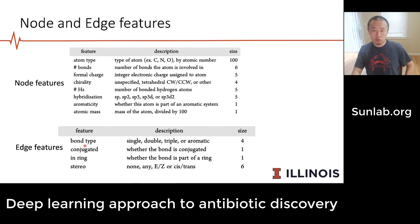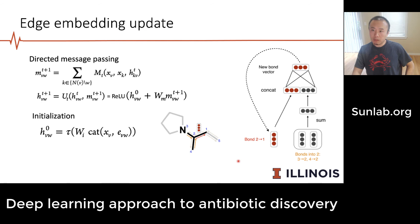In terms of node and edge features, there are different sets of features on the nodes, including atom types and number of bonds, each with a specified dimensionality. Similarly for edges, features include bond type, whether the bond is on a ring, and other properties — so there are a number of features on the edges as well. For the edge embedding update, they use a message passing strategy commonly used in graph neural networks.